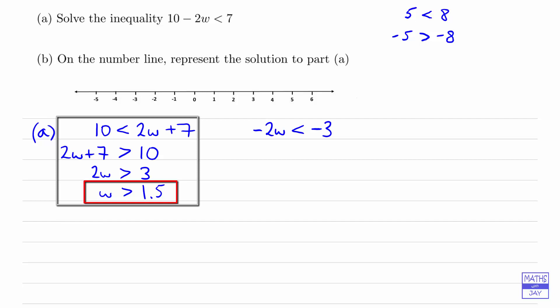So that's just an example using ordinary numbers to show you why we need to change the direction of the inequality in the example that we're doing here. So when we divide by negative 2, w is greater than negative 3 divided by negative 2, so w is greater than 1.5.